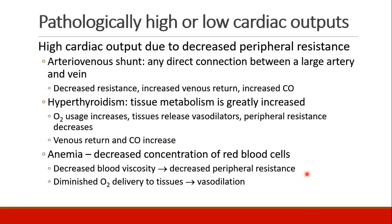Anemic patients can also have pathologically high cardiac output. As red blood cell concentration decreases, the blood becomes less viscous — a little thinner — so it flows more easily, giving the effect of decreased resistance. Also, when oxygen delivery to tissues is diminished, tissues vasodilate, which also leads to increased venous return and increased cardiac output.